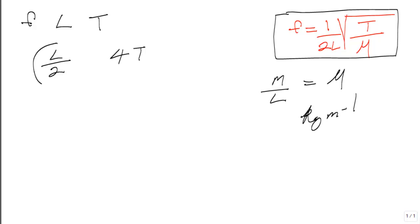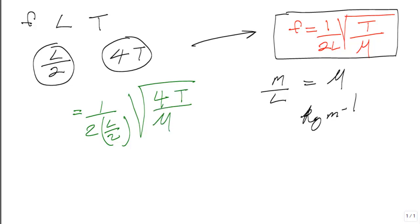After halving L and multiplying T by 4, we are going to plug them into this equation here on the right. Our new equation will look like this: f equals 1 upon 2 multiply L upon 2 root 4T upon mu. And from here, it is simple mathematical manipulation.